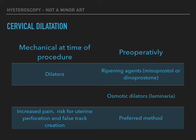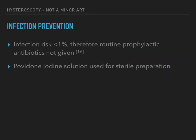Cervical dilation can be done mechanically at the time of the procedure with dilators, or done preoperatively with cervical ripening agents such as misoprostol or dinoprostone, or vaginal osmotic dilators, namely laminaria. Preoperative dilation is generally preferred because it avoids or reduces the need for mechanical dilation and the associated risks of pain, uterine perforation, and false tract creation. Prophylactic antibiotics are not routinely administered during hysteroscopy for prevention of surgical site infection or endocarditis, since post-hysteroscopy infection occurs in less than 1% of women. Sterile preparation is done with povidine-iodine solution.